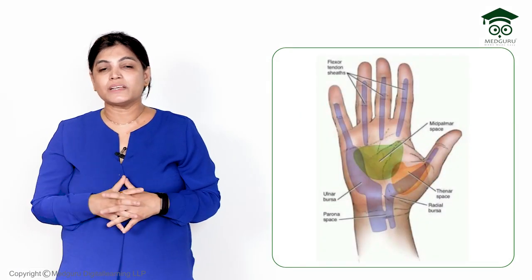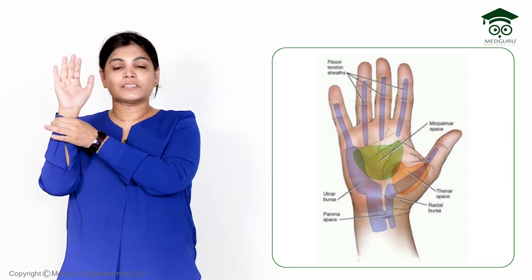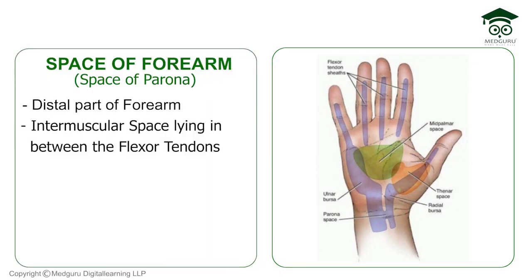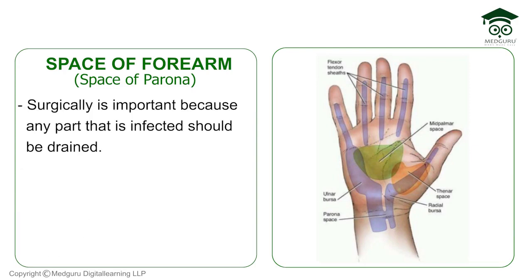The space of forearm is also called the space of Parona. It is an intermuscular space lying in the distal aspect of the forearm, between the flexor tendons. This space is not generally infected, but sometimes massive infection from the mid palmar or thenar space can track down toward the distal forearm and communicate with it — a very painful emergency condition requiring urgent drainage and antibiotic coverage.